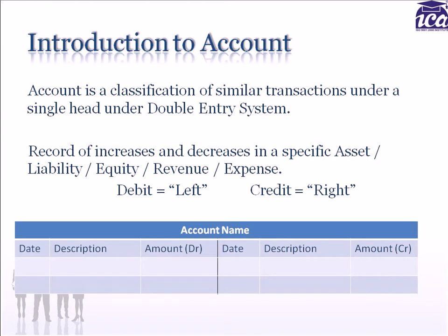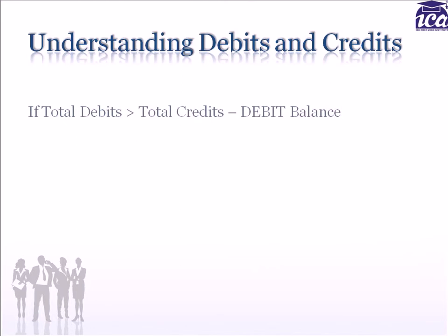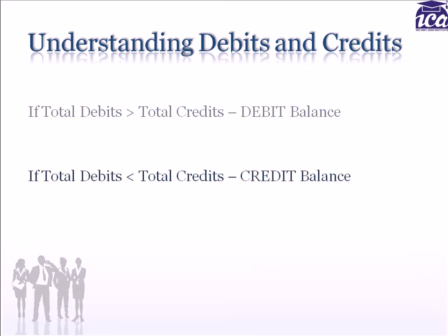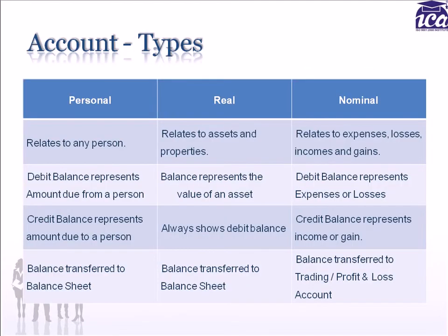Here is the format of a typical account. The left side of the account is called the debit side and the right side is called the credit side. If the total of the debit side exceeds the total credits, it is called a debit balance. Similarly, if the total of the credit side exceeds the total debits, it is called a credit balance. There are three types of accounts: personal, real, and nominal.